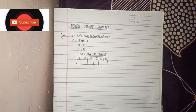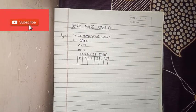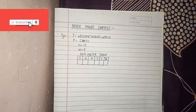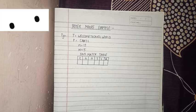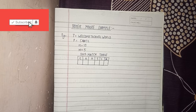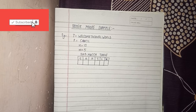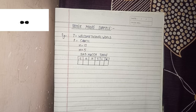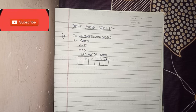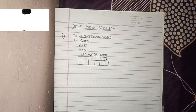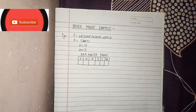Hey guys, welcome back to our channel. Today we will discuss the Boyer-Moore example. Here the text is 'welcome to child world' and the pattern is 'child'. The length of the text is denoted by n and the length of the pattern is denoted by m, so we have found the value of n and m to be 19 and 5 respectively.